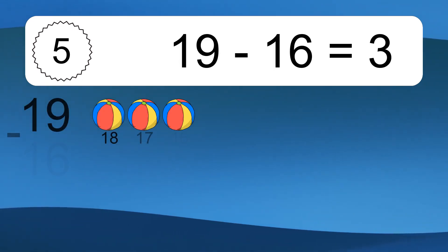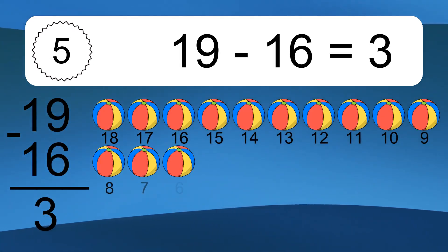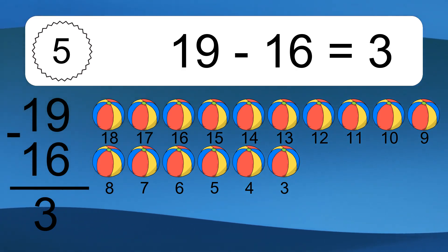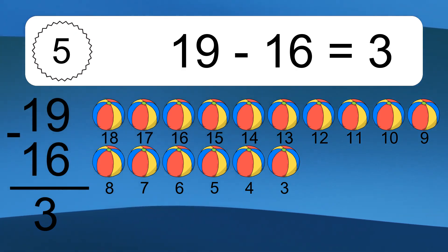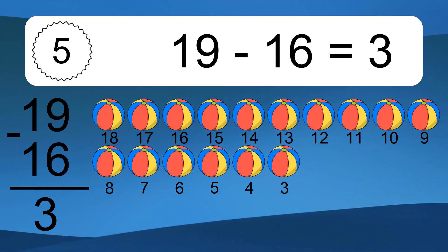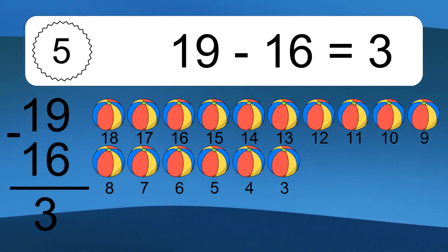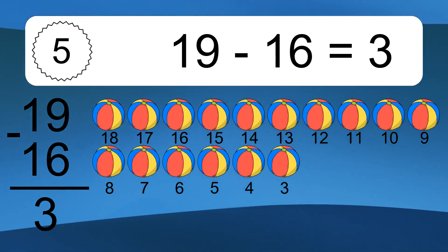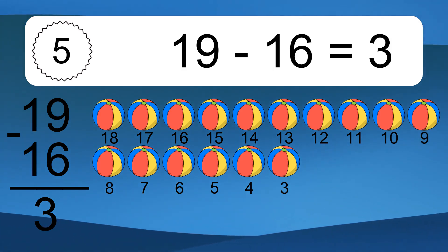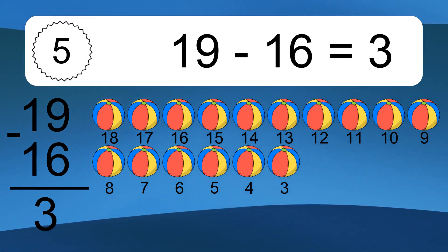19 minus 16 equals 3. Let's count it: 18, 17, 16, 15, 14, 13, 12, 11, 10, 9, 8, 7, 6, 5, 4, 3.